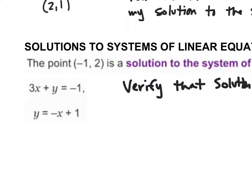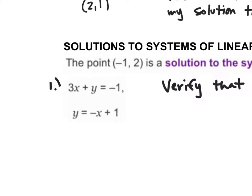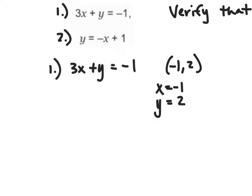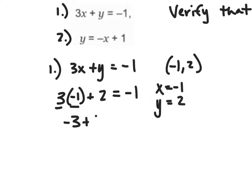I'm going to label this as my first equation and my second equation. In my first equation I've got 3x plus y equals negative 1. With the point negative one comma two, x equals negative 1 and y equals 2. I substitute those in: 3 times negative 1 plus 2 equals negative 1. Three times negative 1 gives me negative 3, plus 2 equals negative 1 — that is a true statement, so this point checks out for that equation.